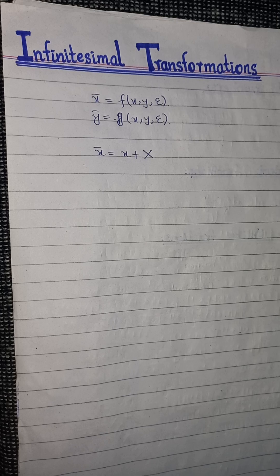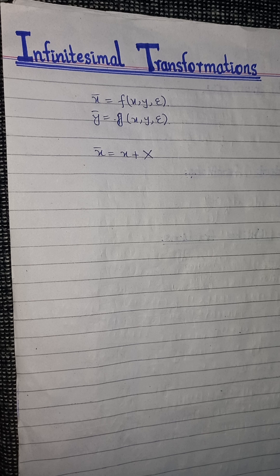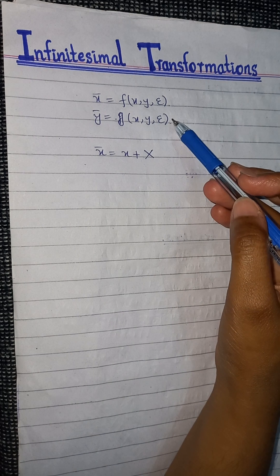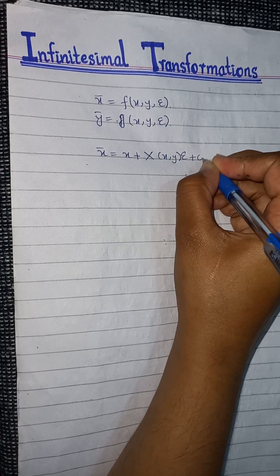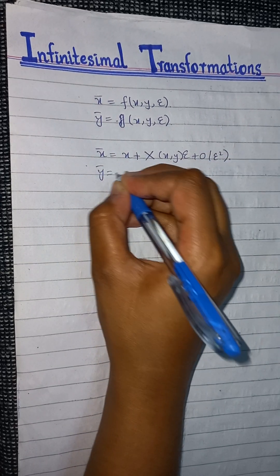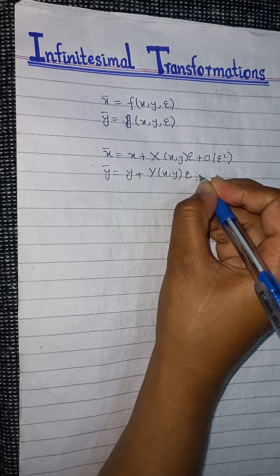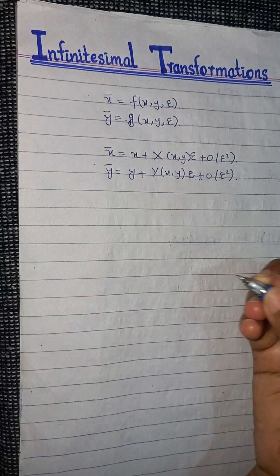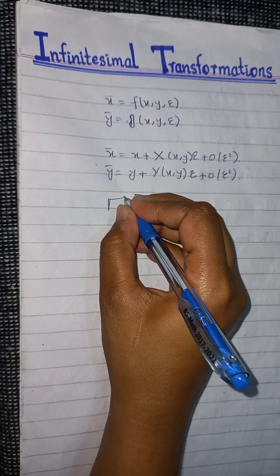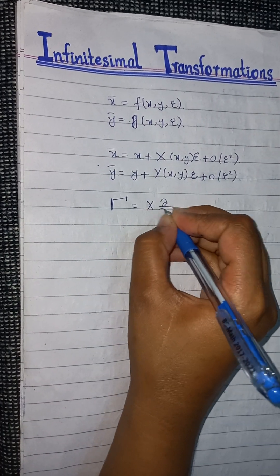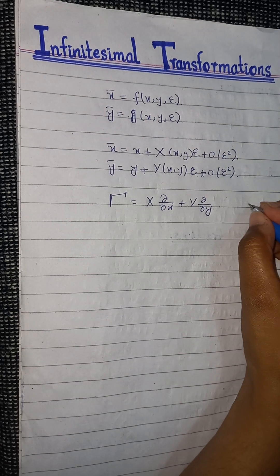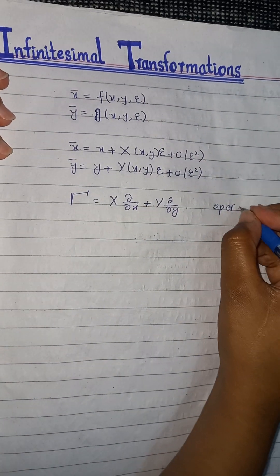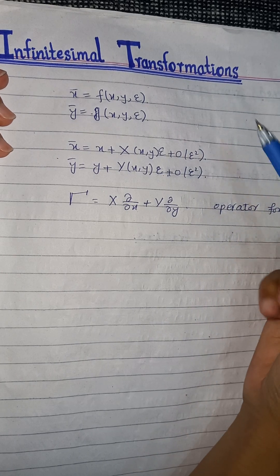In today's lecture we will talk about infinitesimal transformations. For a given Lie group there are three ways of representing it. The first way is the global form. The second way is the local form: x-bar equals x plus capital X(x,y) times epsilon plus order epsilon squared, and y-bar equals y plus capital Y(x,y) times epsilon plus order epsilon squared. The third way is the operator form: gamma equals x times partial by partial x plus y times partial by partial y.